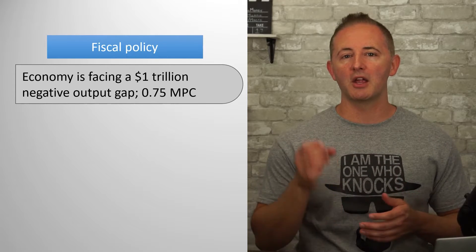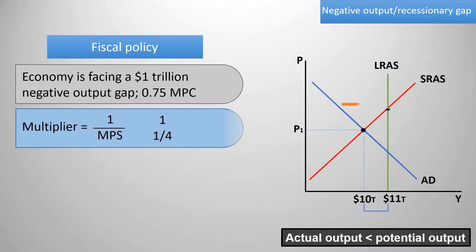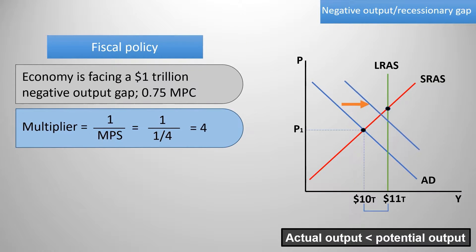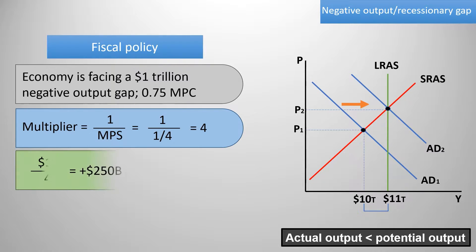The expenditures multiplier is 1 over MPS, so in this case it's 4. Since the goal is to increase GDP by $1 trillion, we'll take that trillion dollars and divide it by the multiplier and get that they'd need to spend $250 billion to increase GDP by $1 trillion.